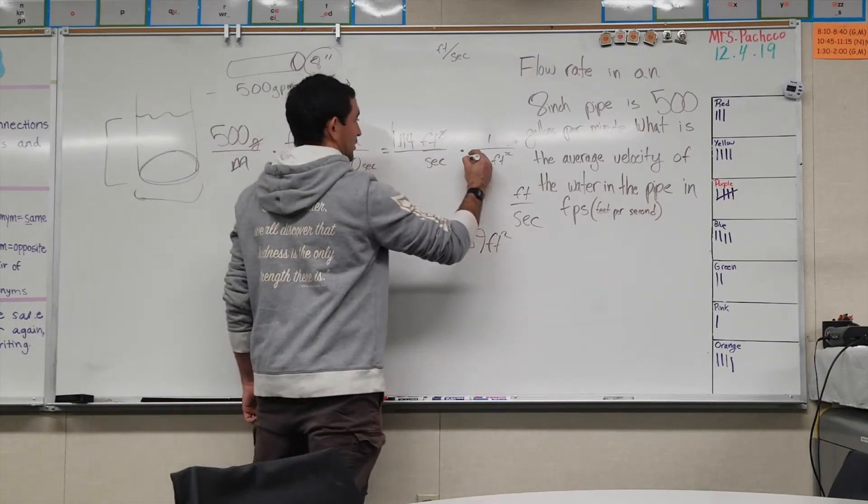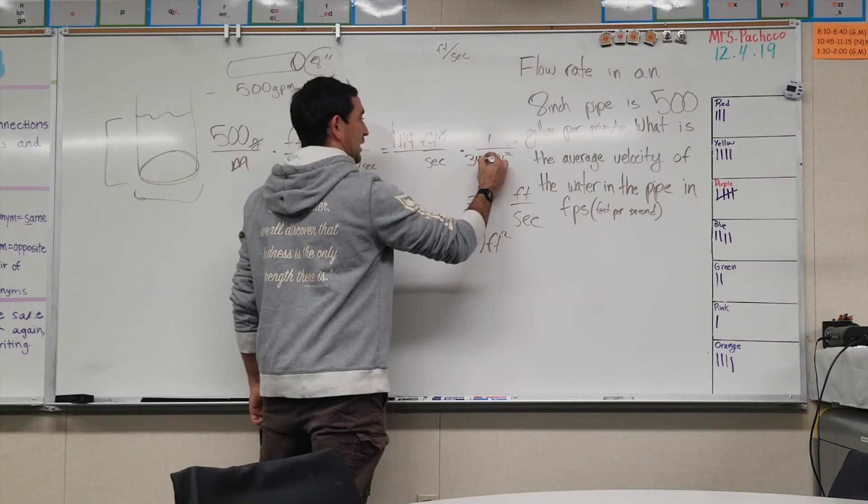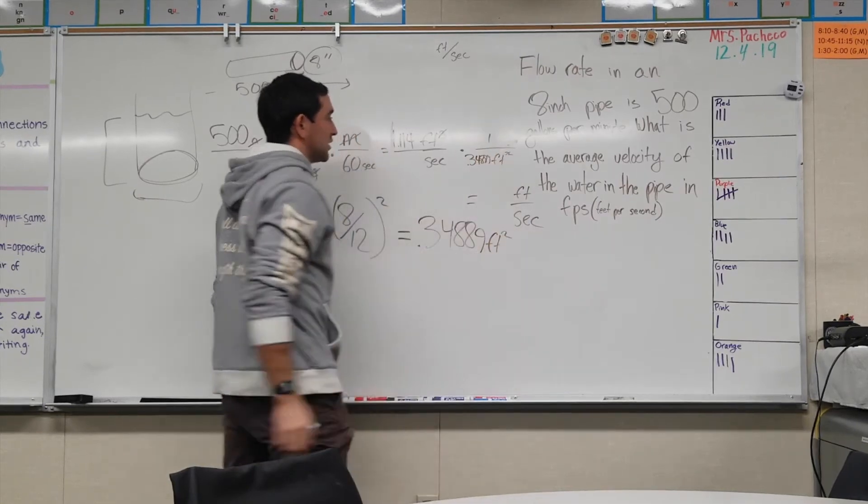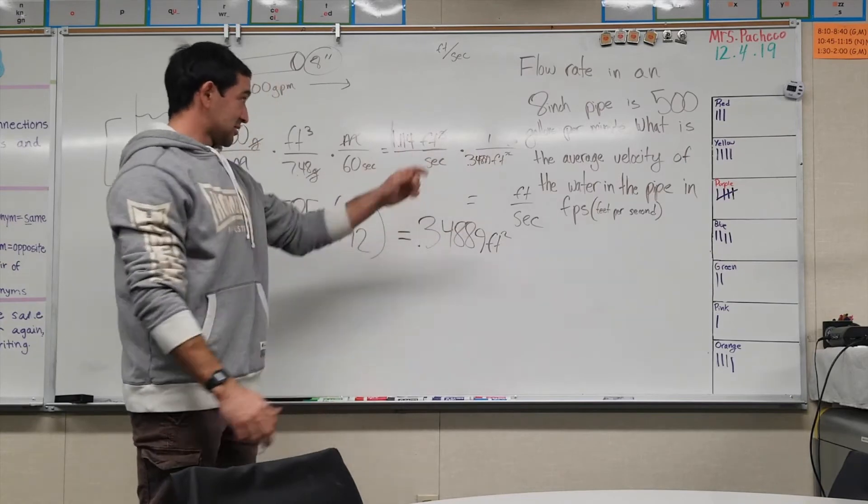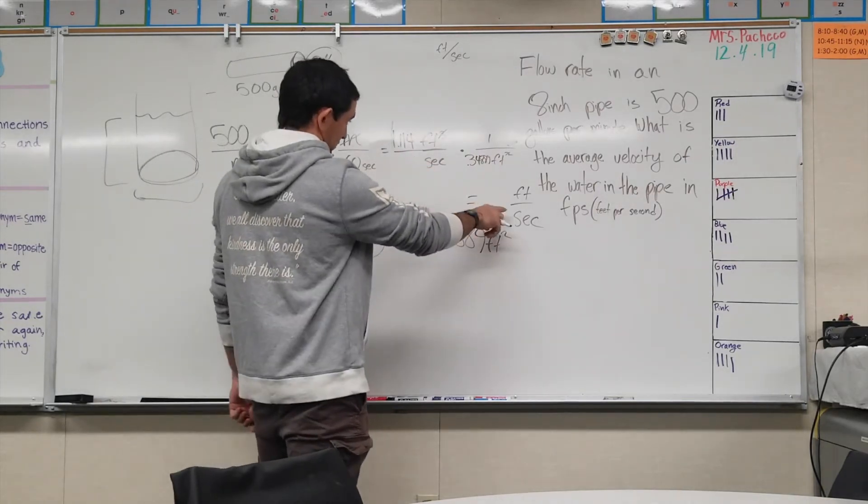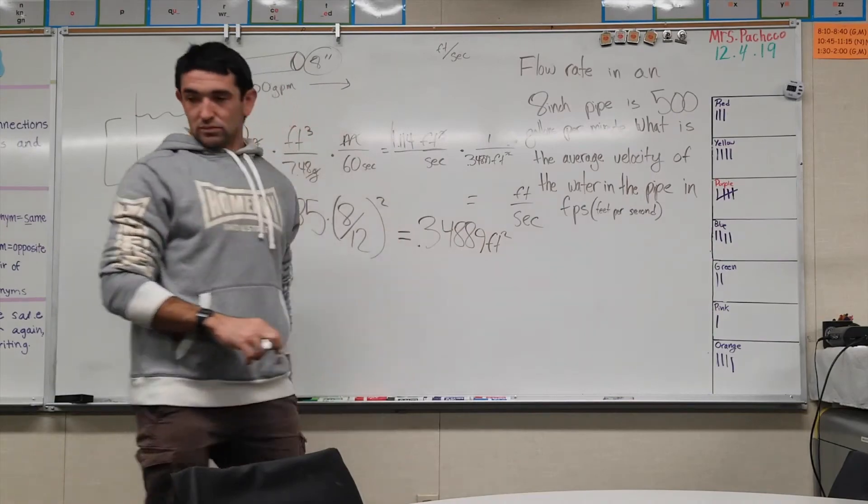Now we can take this over here: 0.349 square foot. And it does like we want it, it cancels it out and it takes you to feet per second.